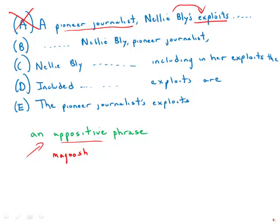B, notice, has the correct appositive. Nellie Bly, pioneer journalist, that is a correct appositive construction. We'll go back to that.